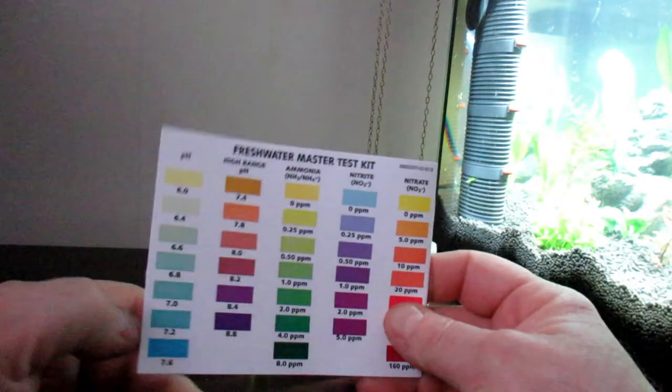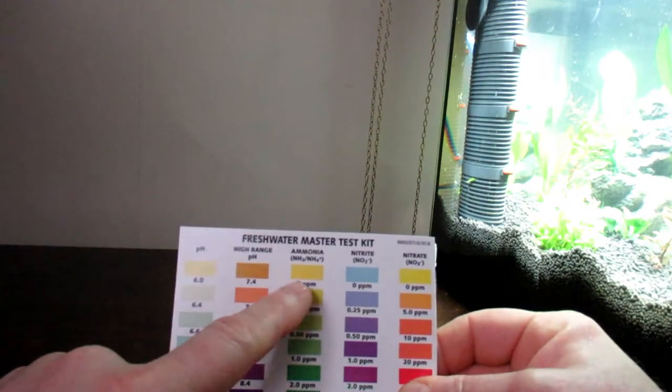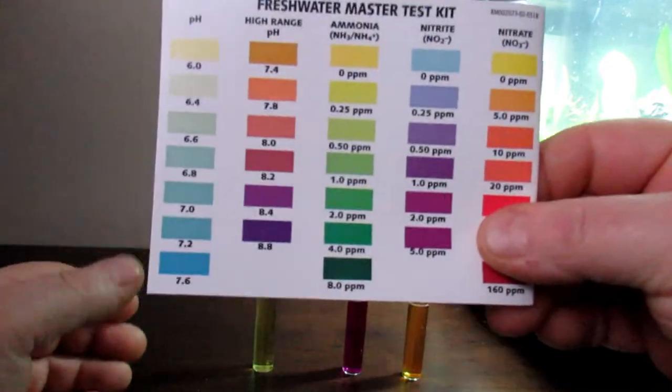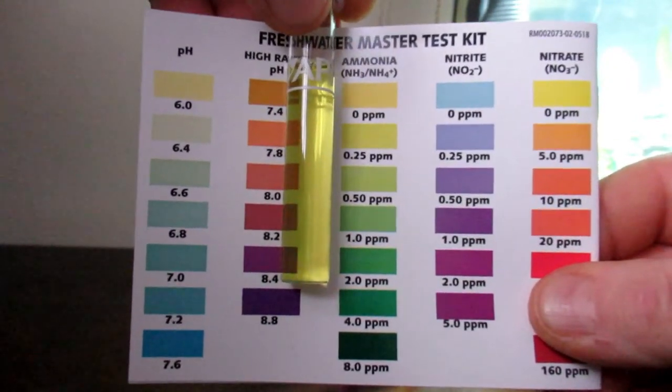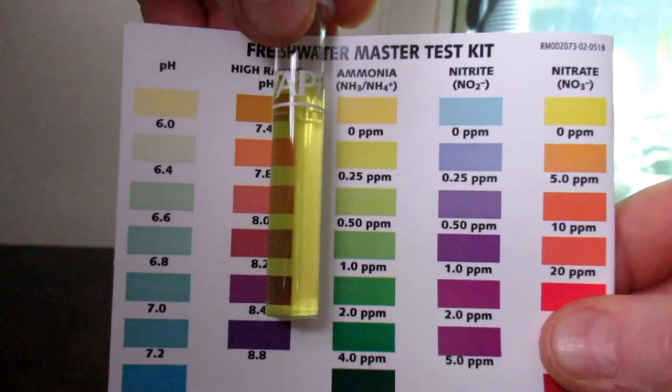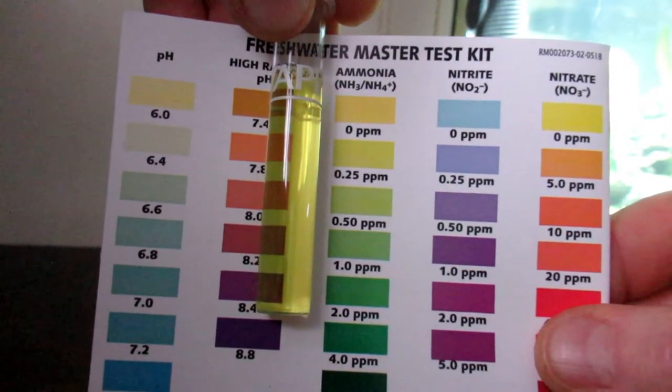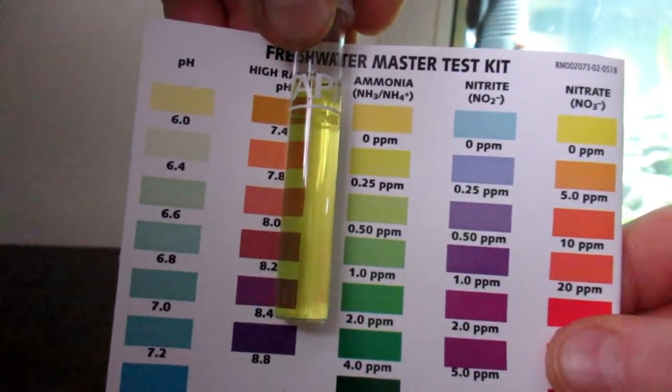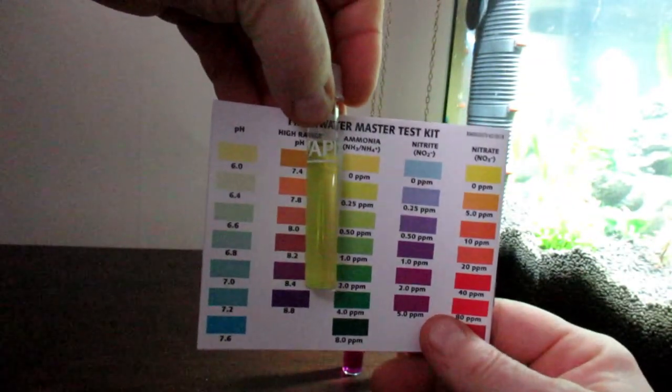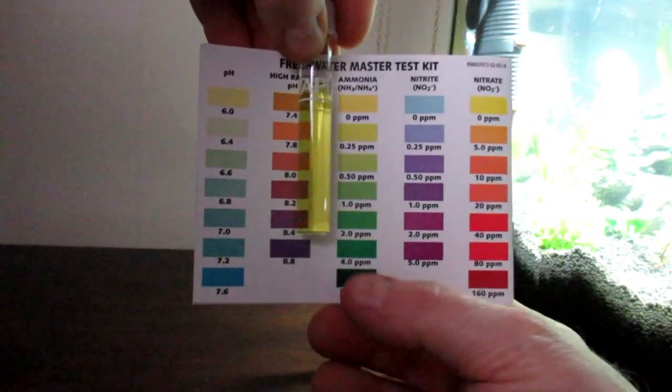Here we go, so the first one we're going to be looking at is ammonia, which is this one. Let's have a look. Okay, well I reckon that's 0.25 parts per million. I want to get that green, so I'm going to add some ammonia today. As you can see it means that the ammonia has been eaten because when we first tested this it was at four.